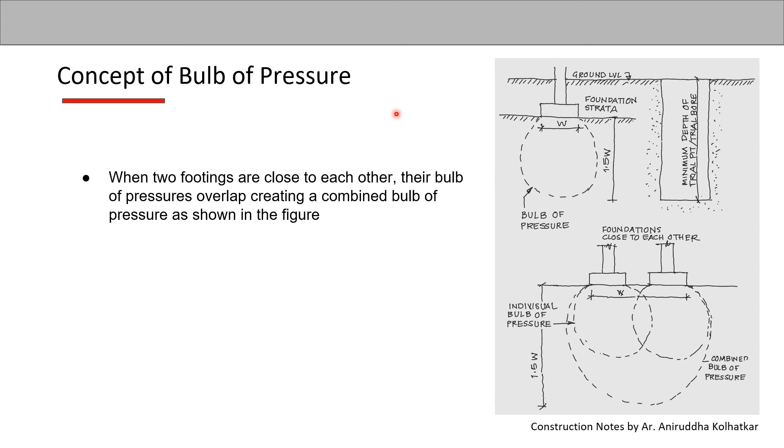Along with this answer, you will draw a neat diagram as shown here. You can show a footing with the bulb of pressure in dashed lines. Mention W and 1.5 times W and write the label 'bulb of pressure' here.